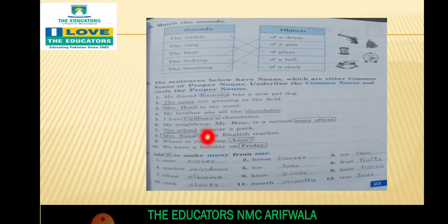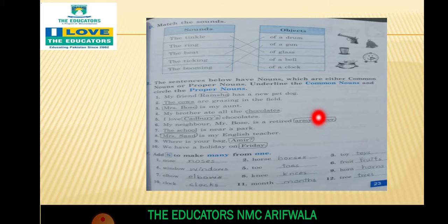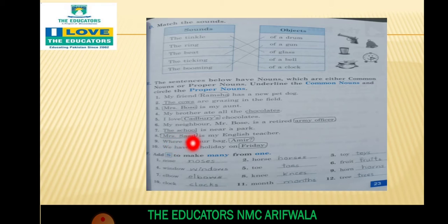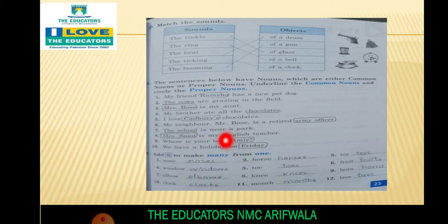My neighbor Mr. Bose is a retired army officer. Mr. Bose special ہے، خاص ہے، proper ہے، اس لئے ہم نے اس کو circle کر دیا۔ The school is near a park. The school کو underline کیا - circle نہیں - کیونکہ وہ common ہے۔